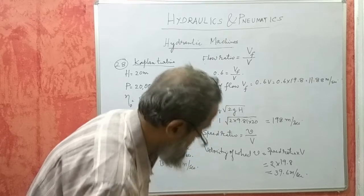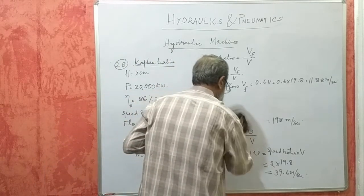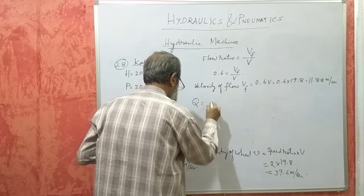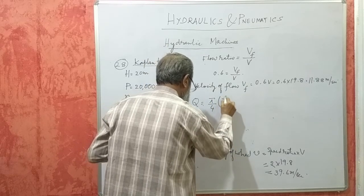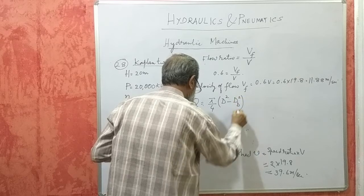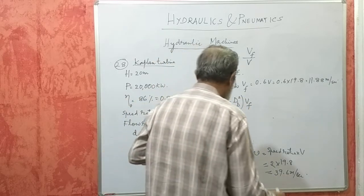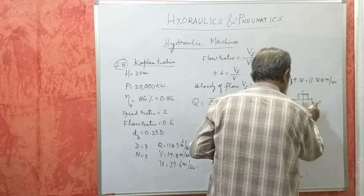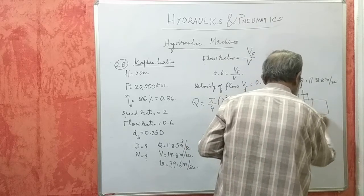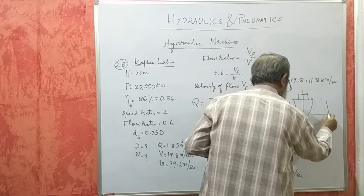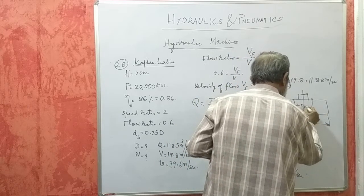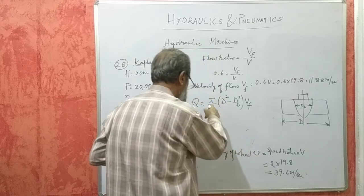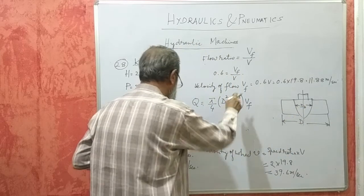Now Q is equal to pi by 4 into d square minus db square into Vf. In a Kaplan turbine, we have the shaft like this, this is called the boss, these are the blades, wains. This is capital D, this is called db. The water is flowing here, so the area of flow will be pi by 4 into d square minus db square into velocity of flow.